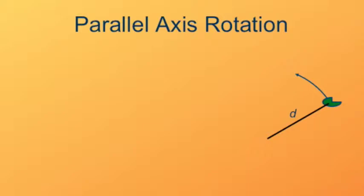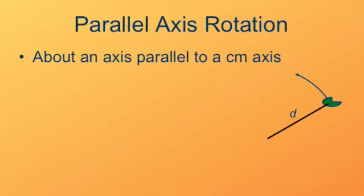First I'll explain the kinds of systems that the parallel axis theorem applies to. Any object is shown by this green irregular shape rotating about some axis that does not pass through its center of mass.